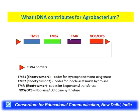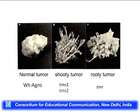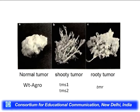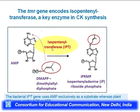In the TMR mutant, instead of callus you get many roots — so-called rooty tumors. This is the phenotype observed when cytokinin is absent. The TMR gene codes for cytokinin biosynthesis. Agrobacterium provides both auxin (from two auxin biosynthesis genes) and cytokinin (from one cytokinin biosynthesis gene) in equal amounts, resulting in callus. Mutation in the auxin biosynthesis gene results in a shooty tumor; mutation in the cytokinin biosynthesis gene results in a rooty tumor. The gene codes for isopentenyl transferase (IPT), which adds an isopentenyl group to the N6 of adenosine monophosphate (AMP).